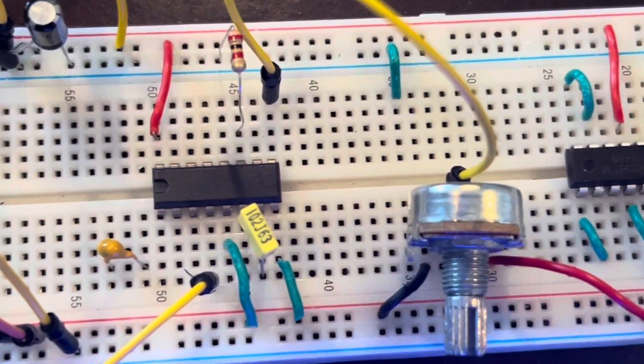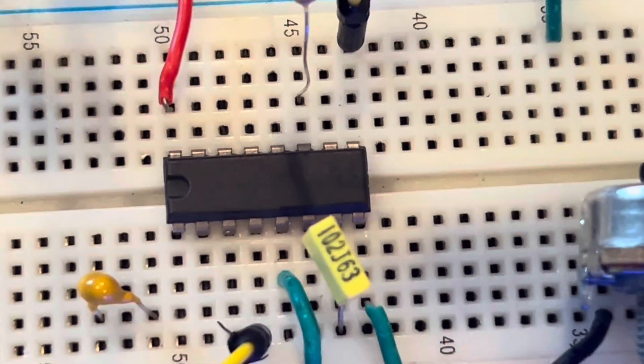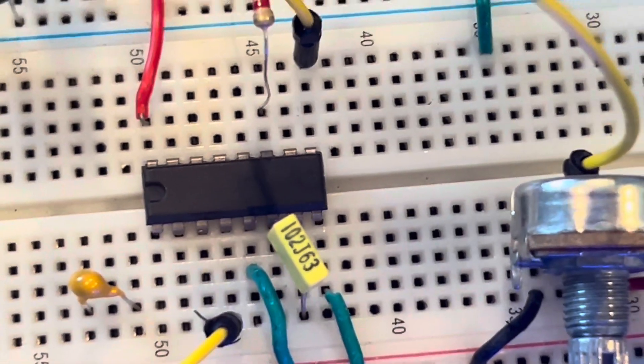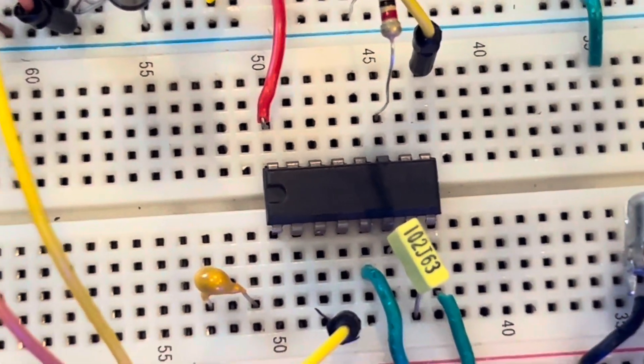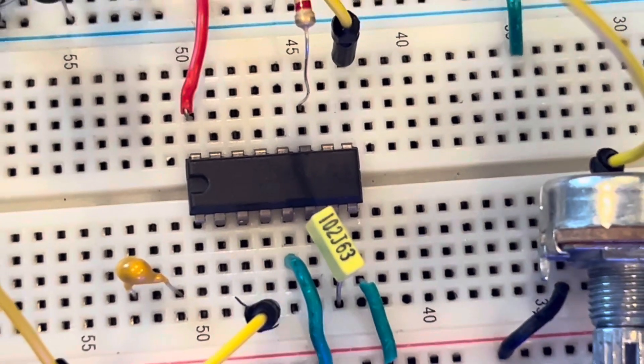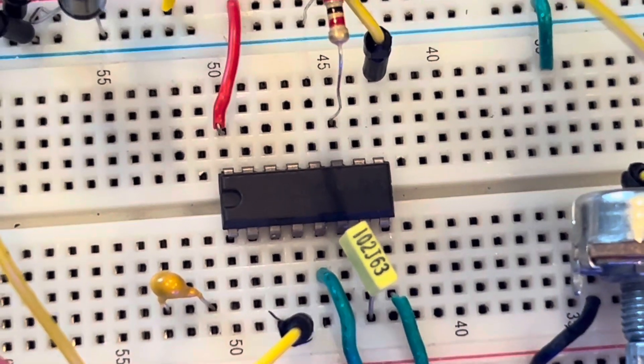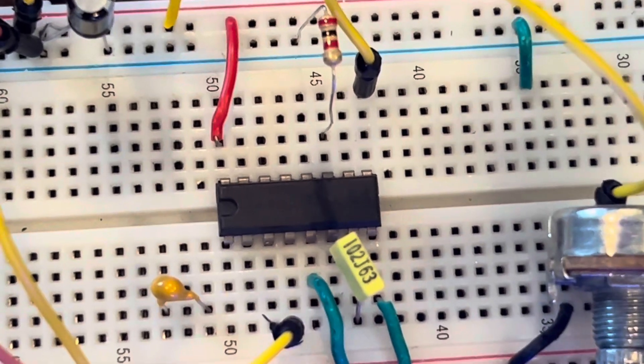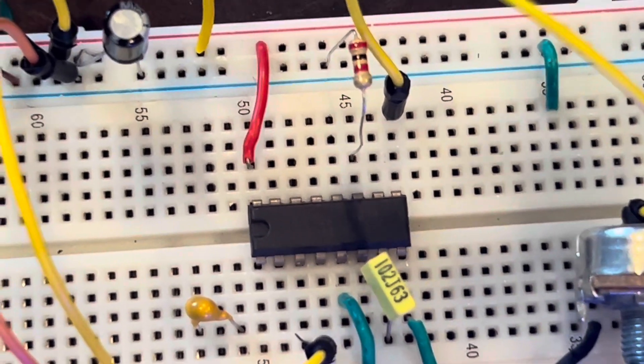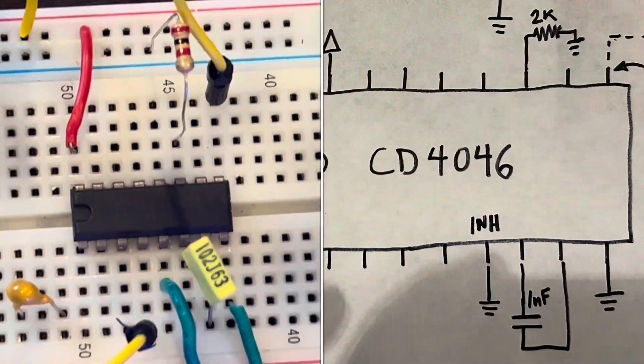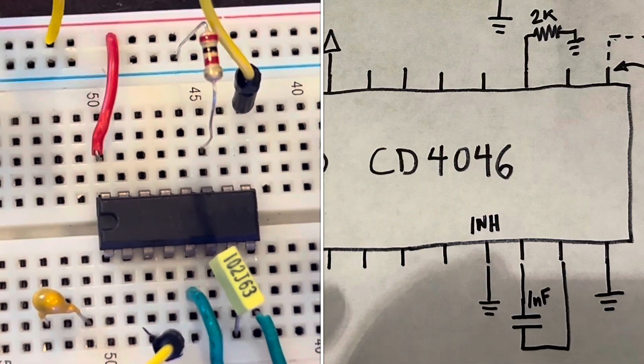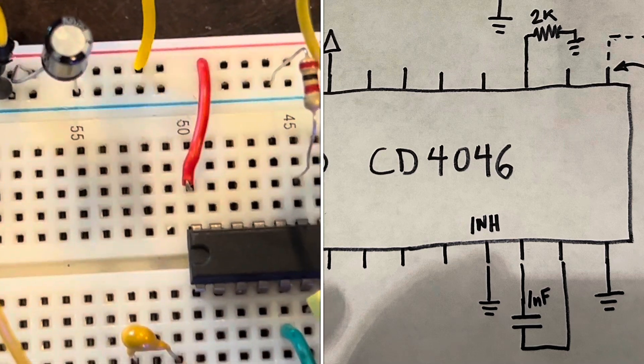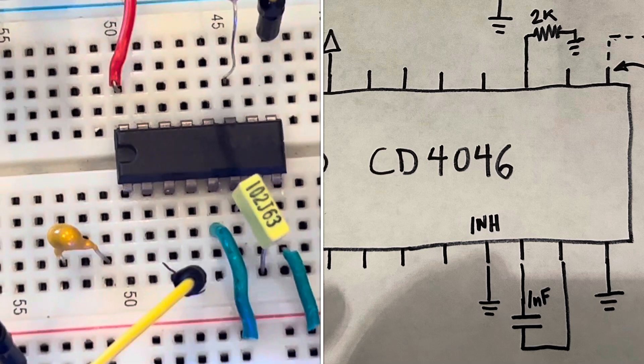So this is a CD4046. This is a PLL phase locked loop IC, and basically it has a built-in voltage controlled oscillator. The way this voltage controlled oscillator works is you apply a voltage to pin 9, and it oscillates based on a frequency range created by this capacitor and this resistor. I have a 2K resistor here and a 1 nanofarad capacitor here.